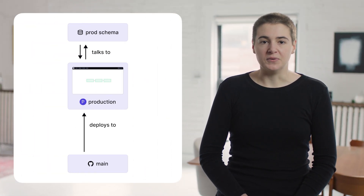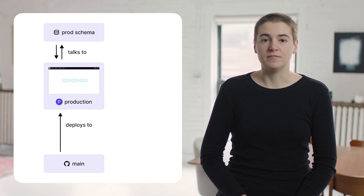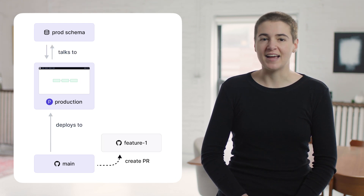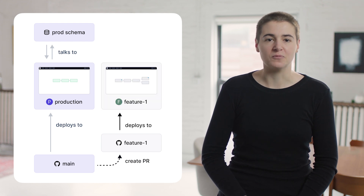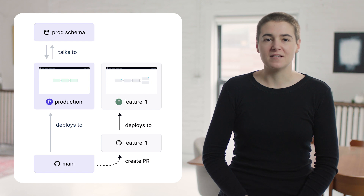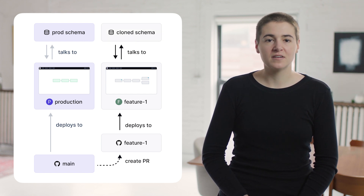Let's take a look at how these work. Most users have a main branch that contains their code and a production deployment where that code is deployed. Branch deployments follow a workflow that should feel familiar. You create a branch, make your changes, and create a pull request. Then Dagster takes over and creates a lightweight deployment where you can run and test the code in your pull request. These deployments can be configured so that they interact with staging resources, which allows you to materialize your assets without affecting production data.